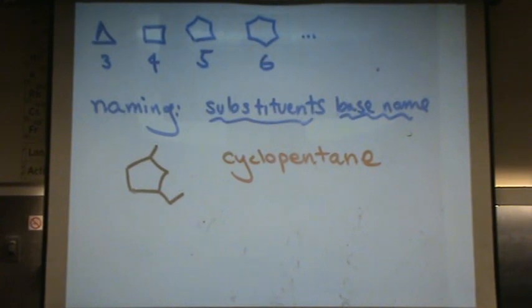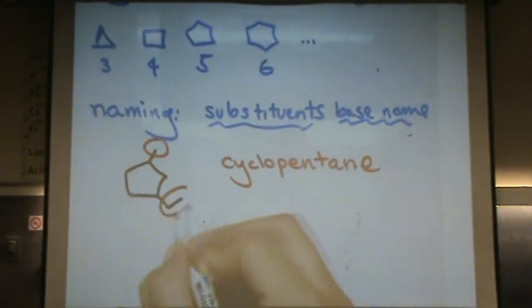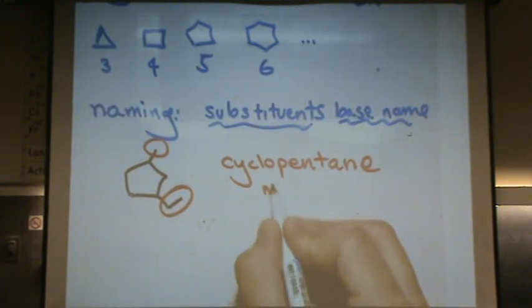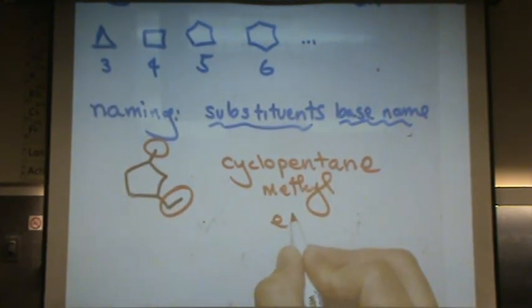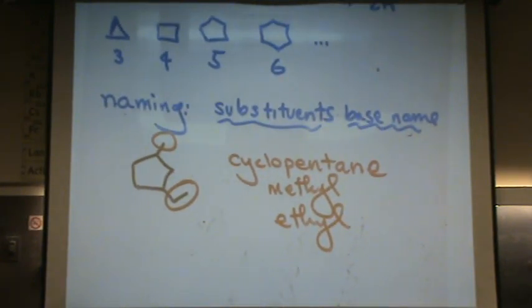Then you do the branches, just like before. What's this one? Methyl and... yeah, methyl. Only one. And one ethyl. Ethyl will be named first, in the substituent order, because we're going alphabetical order.